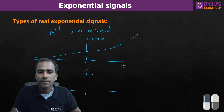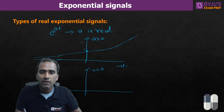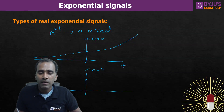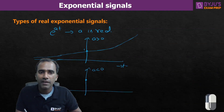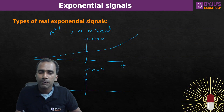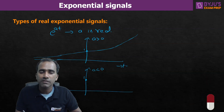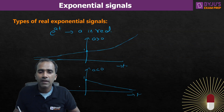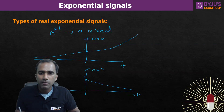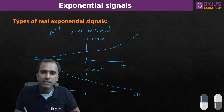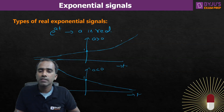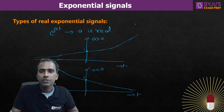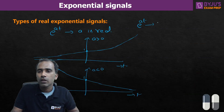If 'a' is negative: at t=0 the value is 1. For positive time, 'a' negative means power is negative, so the value is less than 1 and decreases as t increases — this is an exponentially decaying function. For negative time, 'a' negative and t negative gives a positive power, so the value increases as you go from 0 to -∞. So the signal is exponentially increasing in the negative time direction and exponentially decreasing for positive time.